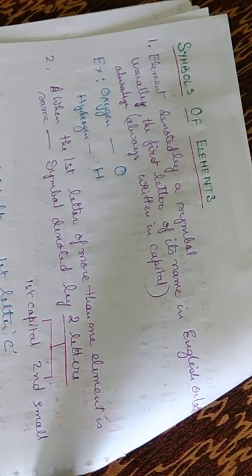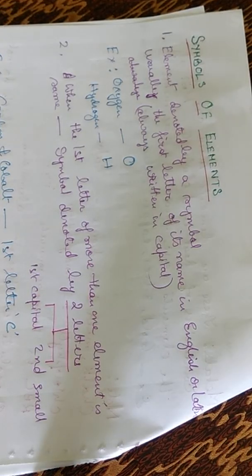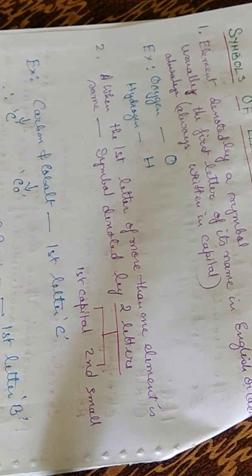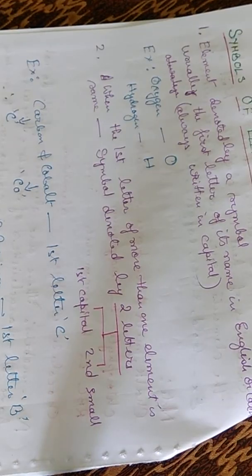Now we come to the symbols of elements. Elements are denoted by a symbol — usually the first letter of their name in English or Latin, always written in capital. For example, oxygen is O and hydrogen is H. When the first letter of more than one element is the same, the symbol uses two letters: the first is capital and the second is small. For example, carbon is C and cobalt is Co. Similarly, boron is B, bromine is Br and barium is Ba.